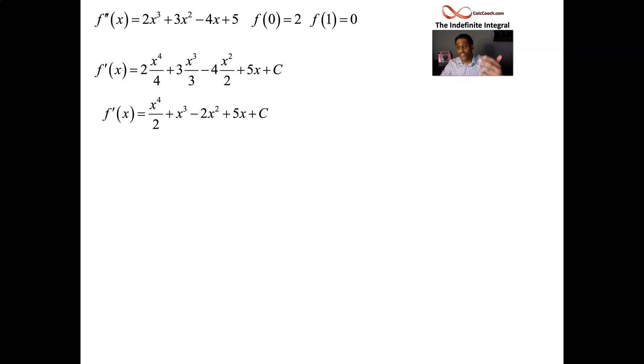x to the 5th over 5, x to the 4th over 4, x to the 3rd over 3, x to the 2nd over 2. The c now gets an x. And we need another constant. Let's use d. Don't use c again. It might be different.